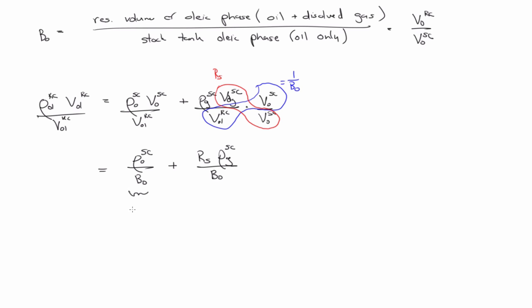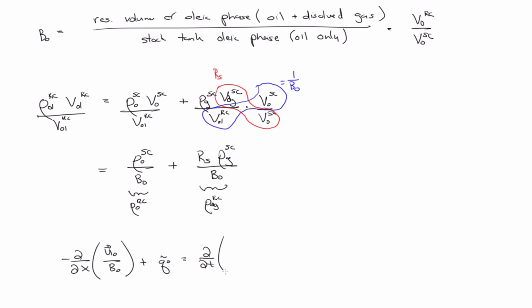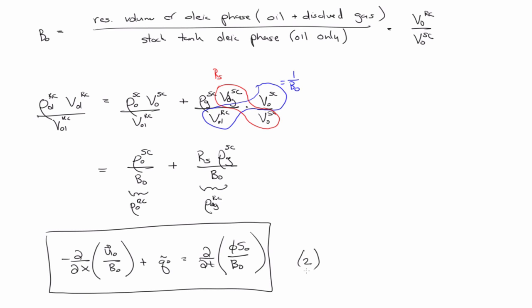This is our density of oil in the reservoir, and this is the density of dissolved gas in the reservoir. Then using that, our oil mass balance equation becomes — just basically plugging in for density of oil in the reservoir. So that's the second equation.